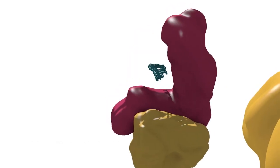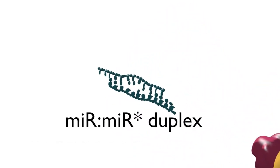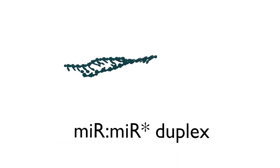The product of this second cleavage reaction is called the miR-miR-star duplex. It carries 5' monophosphates and 3' overhangs of two nucleotides, which is not fully complementary.